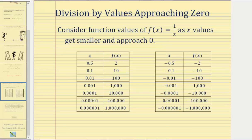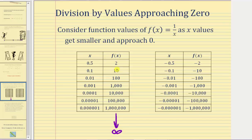Looking at the first table, the x values are approaching zero from the positive side. The function values equal 1/x: one divided by 0.5 is 2, one divided by 0.1 is 10, one divided by 0.01 is 100, and so on. Notice how as x gets closer and closer to zero from the positive side, the function values get larger and larger — they're increasing without bound — which means the function values are approaching positive infinity.